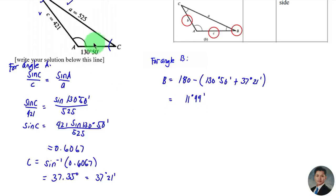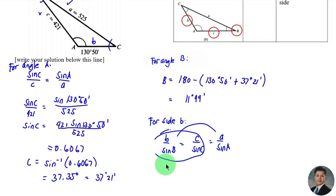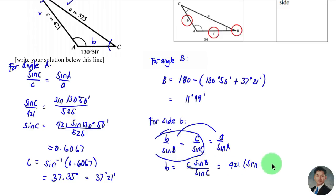The remaining unknown is side b. Using the sine law: b / sin B = c / sin C. So b = 421 × sin(11 degrees 49 minutes) / sin(37 degrees 21 minutes). The answer is 142.11 units.